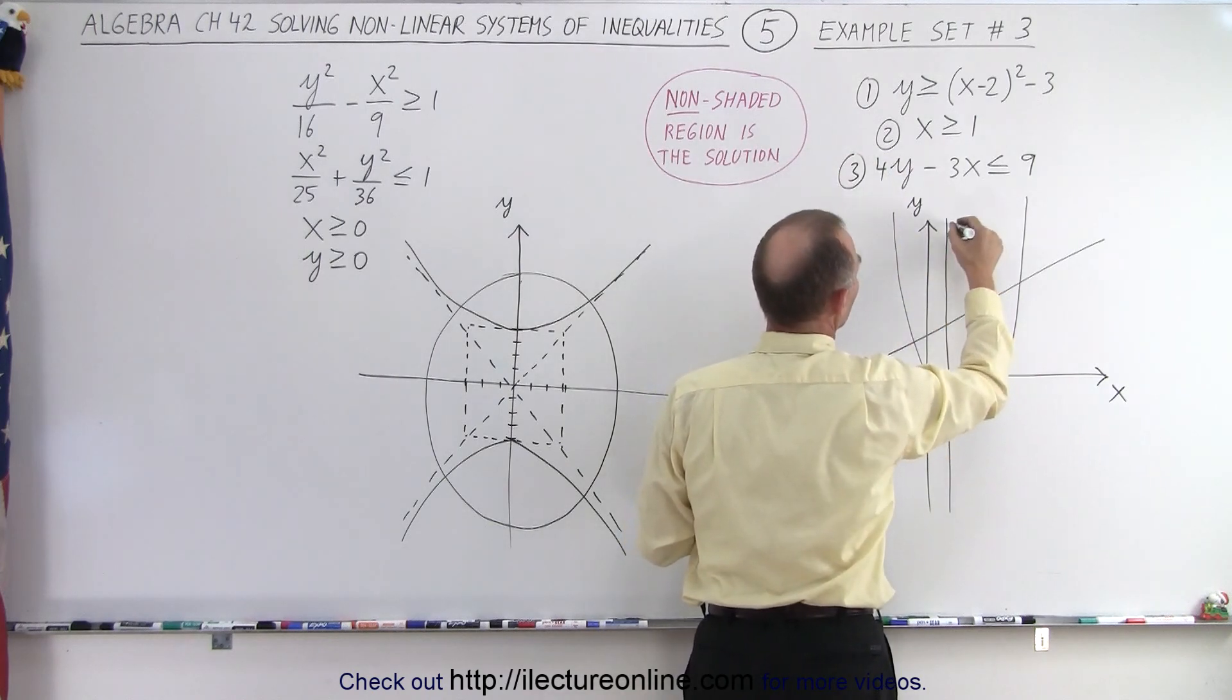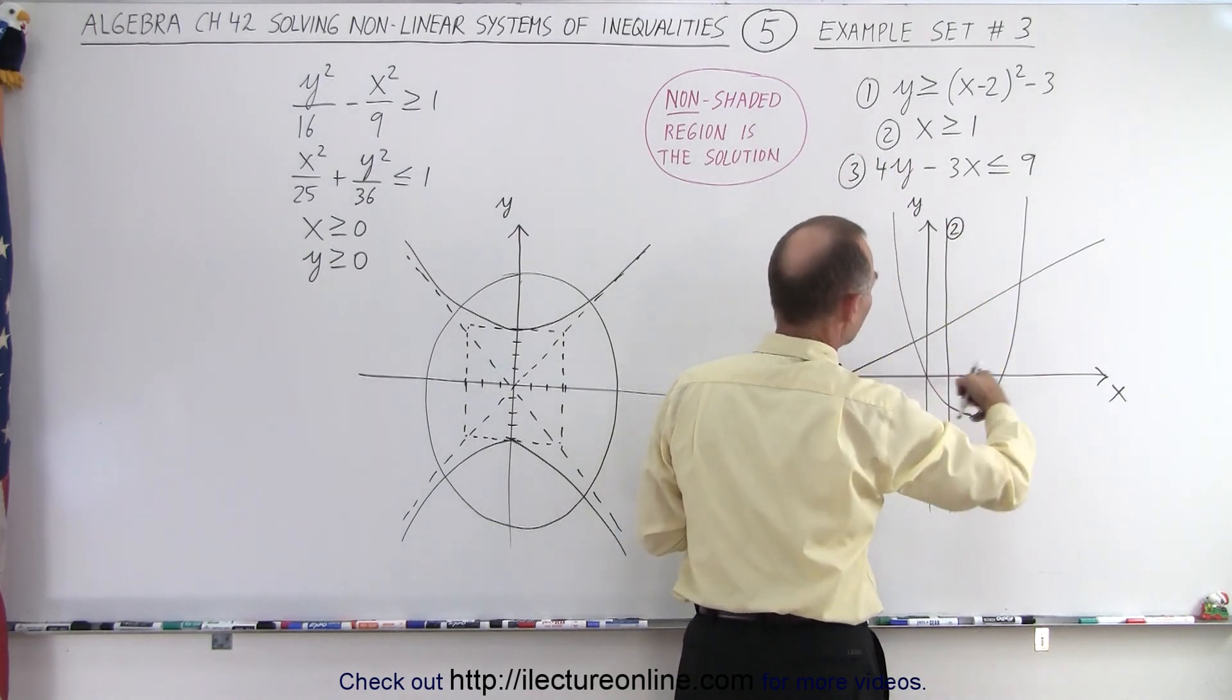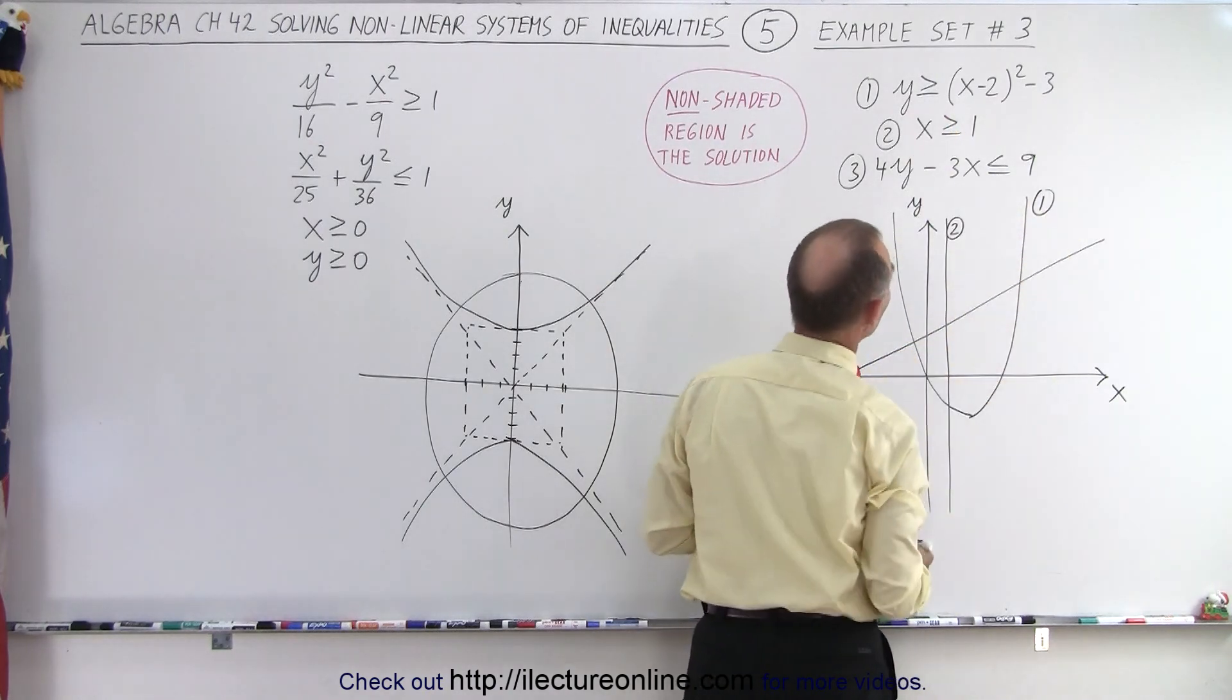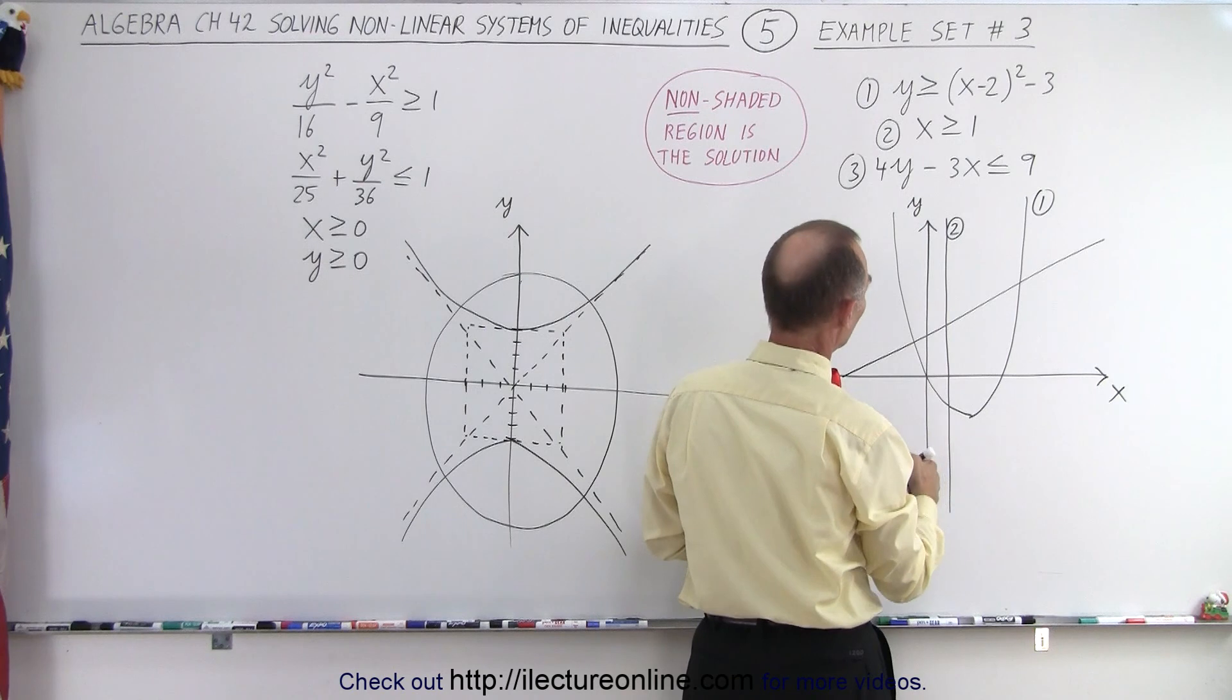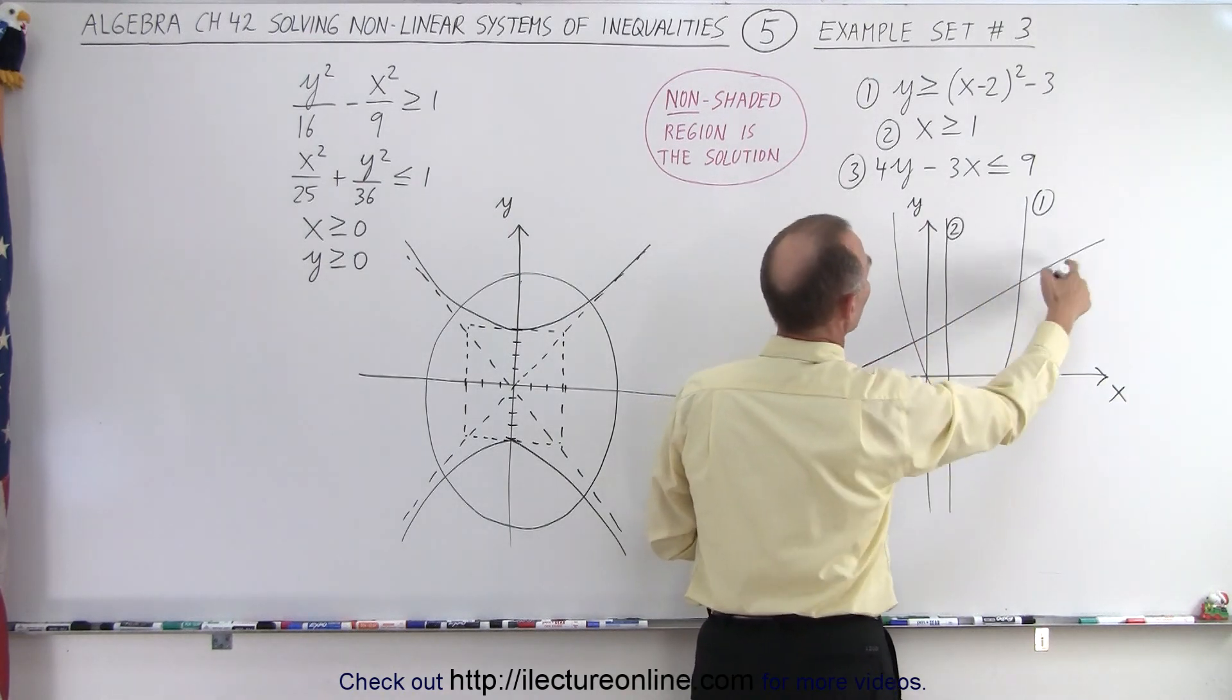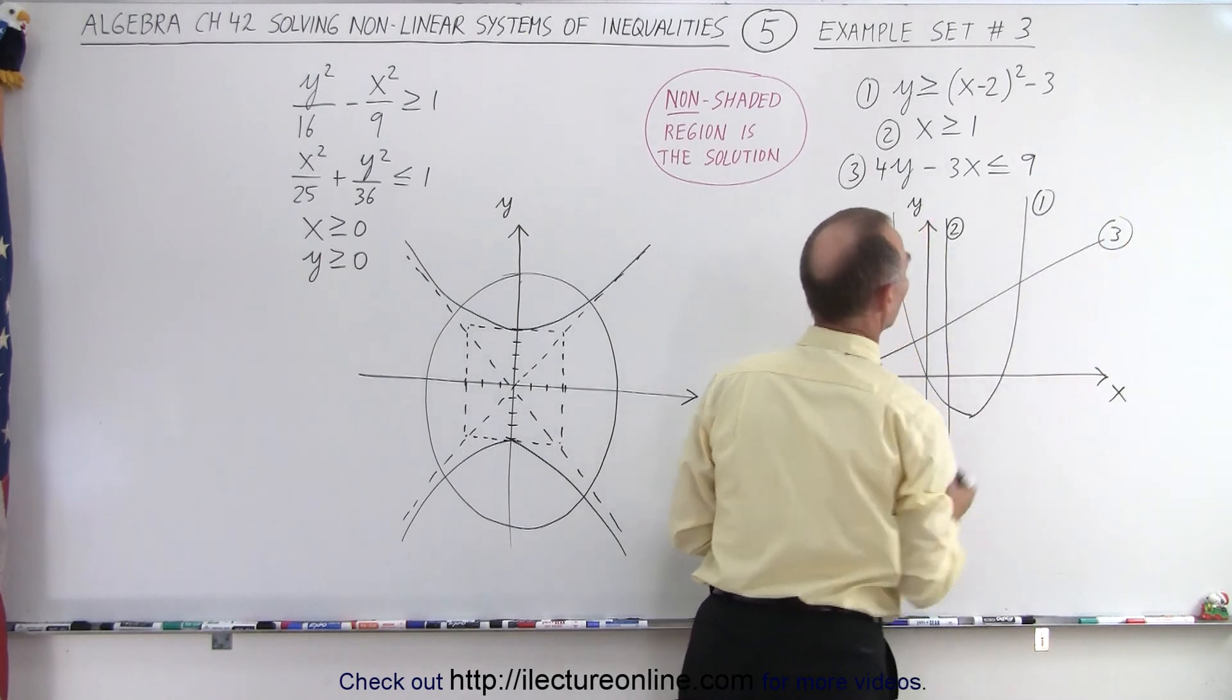So this vertical line here is line number two. The parabola, well, that would be line number one or function number one or curve number one. And then we have this one right here, which is number three.